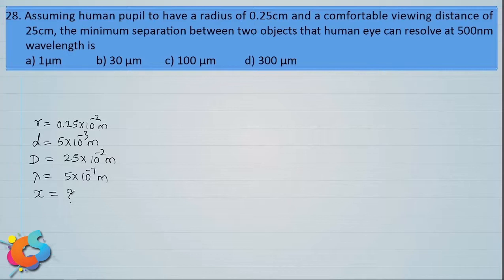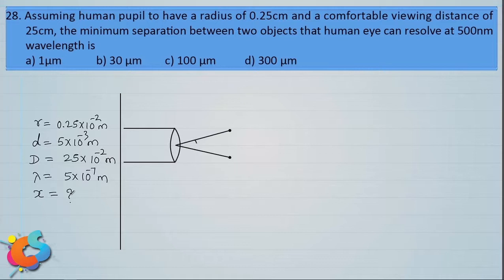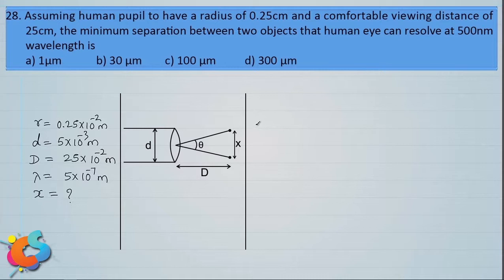The condition to just resolve two closely lying point objects is that the angle subtended at the eye by those two point objects should be exactly equal to the limit of resolution of the eye. This is the fundamental principle behind just resolution for both the human eye and telescope. The limit of resolution of a telescope or human eye is given by: dθ = 1.22λ divided by the diameter of the pupil (small d).